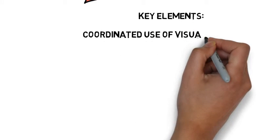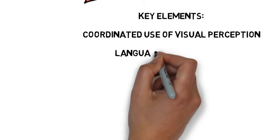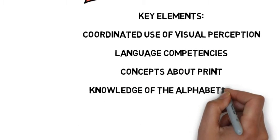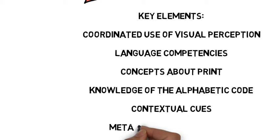The ability to read relies on the understanding of a few key elements: coordinated use of visual perception, language competencies, concepts about print, knowledge of the alphabetic code, contextual cues, and metacognitive strategies.